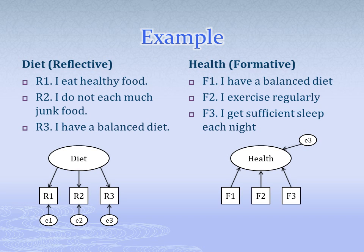Diet can be represented as a reflective construct. It may include measures such as 'I eat healthy food,' 'I do not eat much junk food,' and 'I have a balanced diet.' Notice how each of these measures seems to be saying the same thing — we would expect them to be highly correlated, and removing one wouldn't change the nature of what we are asking about. But consider the formative construct, health. Health can consist of conceptually distinct components: a balanced diet, regular exercise, and sufficient sleep. Each of these measures is asking about something conceptually different. Just because I exercise doesn't mean I have a balanced diet, and just because I get good sleep doesn't mean I exercise.